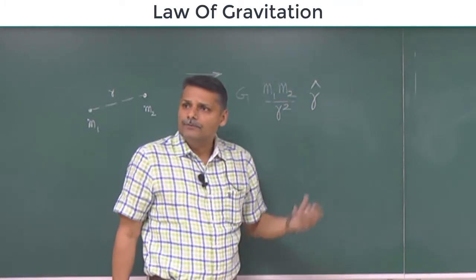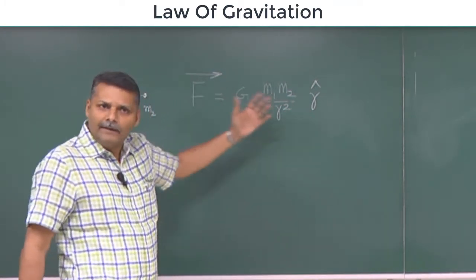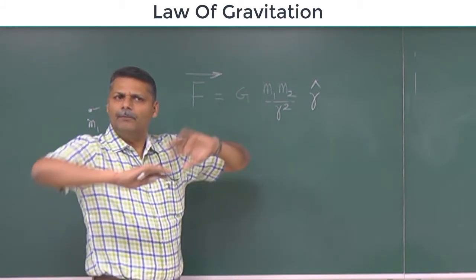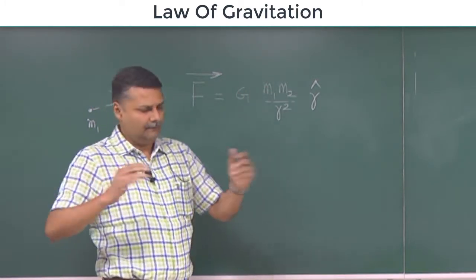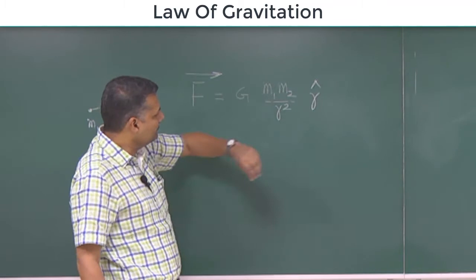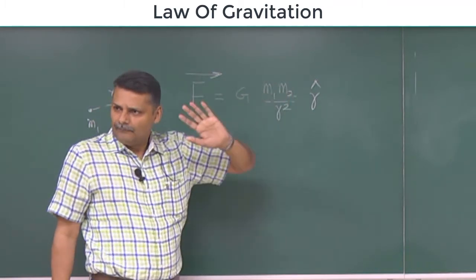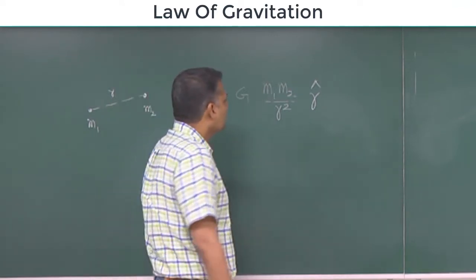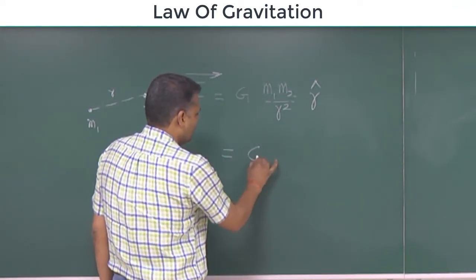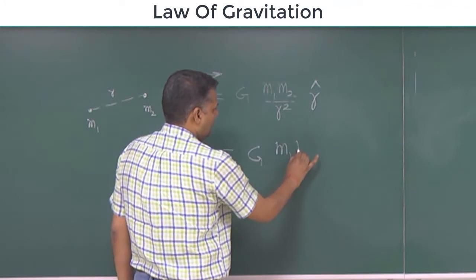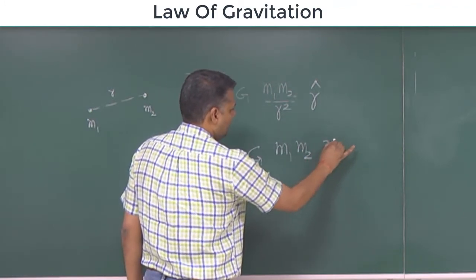Why do we choose r-cap? Because there is no other term here. There are also many ways, mathematical reasons, but we will not go into details of that. You can understand that r is not a mass vector. Is it a vector? No. This r-cap is a vector. I am writing it directly.